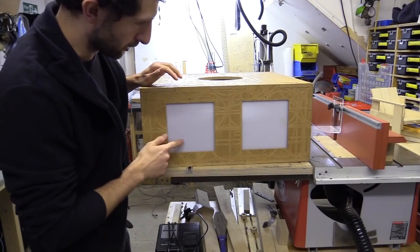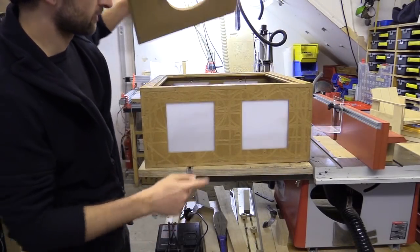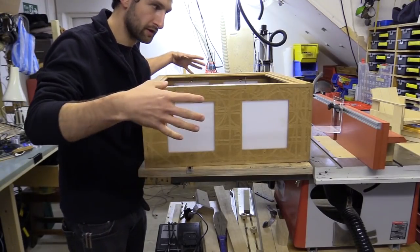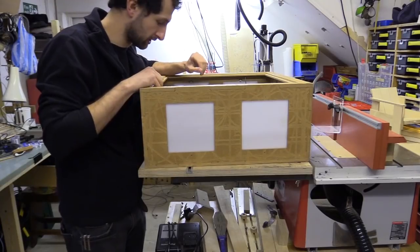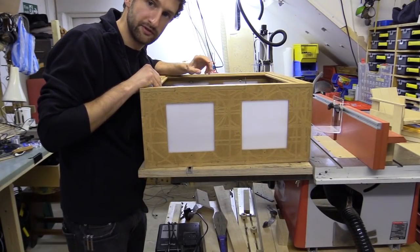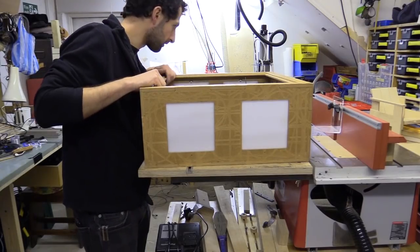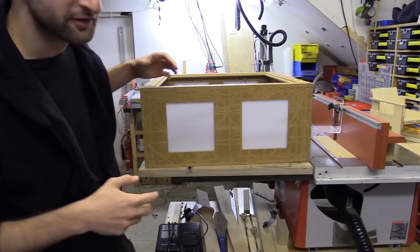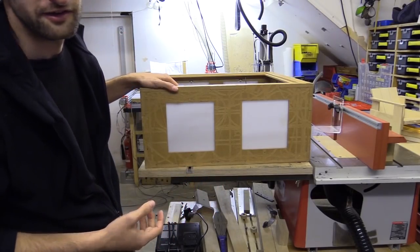When I built the CNC machine, I used opal plastic for these windows, which meant that light could come into the enclosure and made it a little bit atmospheric. What I want to do now is add a strip of LED lights just so the thing illuminates. I think it will look cool.